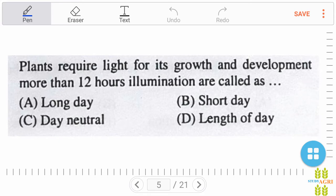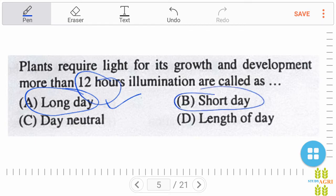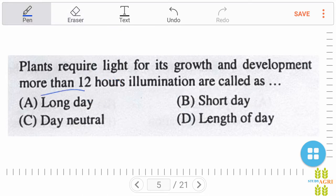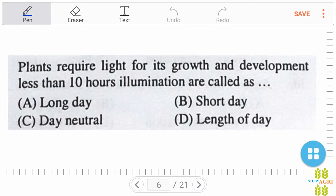Plants require light for their growth and development. More than 12 hours illumination are called option A, long day. Yes, long day is the right answer. If it is less than 12 hours, then the answer must be short day. But in our case, our right answer is option A, long day.